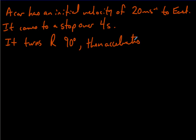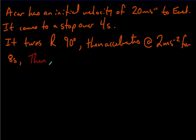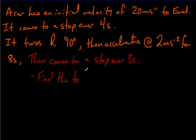We're going to imagine the car just turns on a dime — it doesn't actually travel around a corner, it just rotates to the right. It accelerates at 2 meters per second squared for 8 seconds. Then comes to a stop over the next three seconds. The question says: find the total displacement.